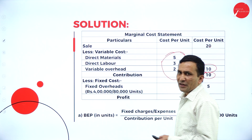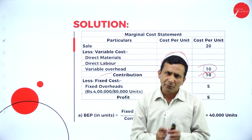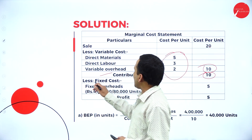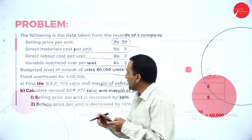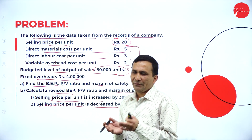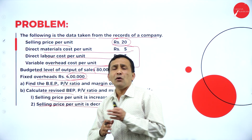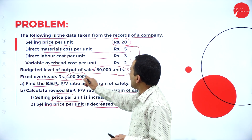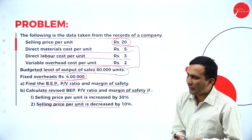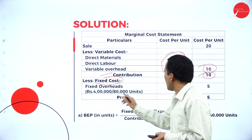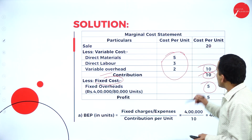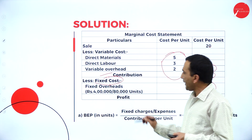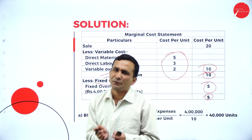From sales ₹20, we subtract the variable cost ₹10. The remaining amount is the contribution — so contribution per unit is ₹10. From contribution, we subtract fixed cost. The fixed cost value is ₹4 lakh; dividing by 80,000 units gives a fixed cost per unit of ₹5. Contribution minus fixed cost gives us a positive result, which is profit.